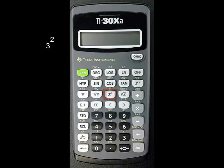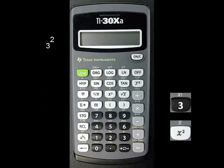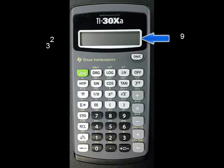To calculate 3 squared, for instance, enter 3, then press the x squared button. It is a unary operator, and the answer 9 appears immediately on the screen without having to press the equal sign.